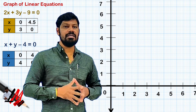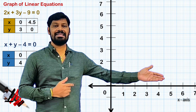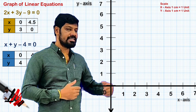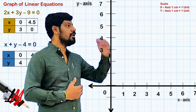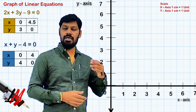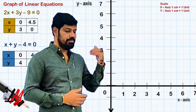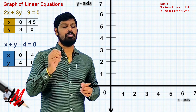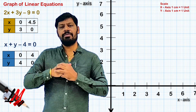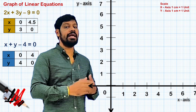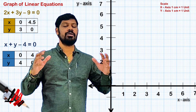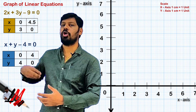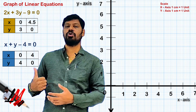When drawing the graph, we must clearly label the x-axis and y-axis, and mention the scale — how many units each centimeter represents on both axes. Also, the best approach is to complete one equation fully — plot the points, draw the line, write the equation — before moving to the second equation, to avoid mistakes.